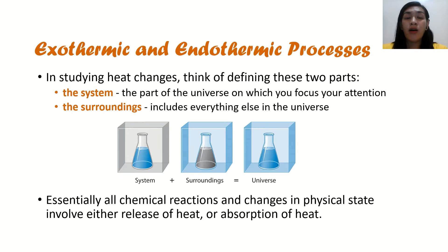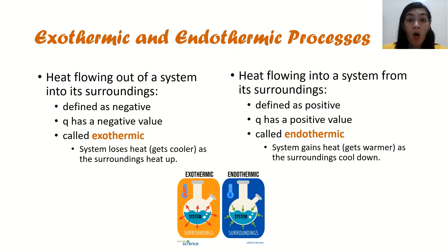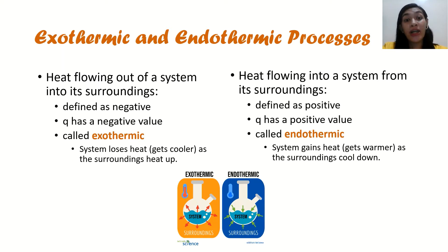These two are the endothermic and exothermic processes. An exothermic process is where heat is flowing out of a system into its surroundings — "exo" meaning going out. It is defined as negative and its Q, or heat, has a negative value. In an exothermic process, the system loses heat or gets cooler as the surroundings heat up.